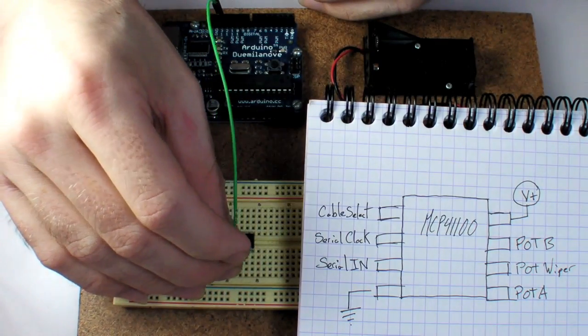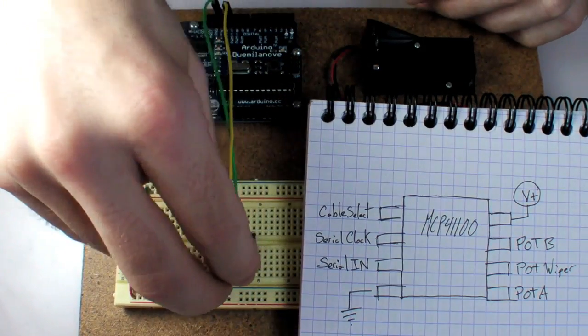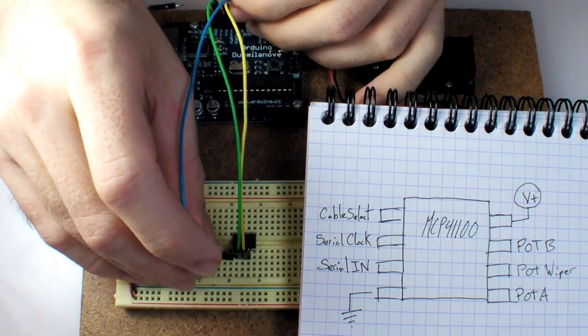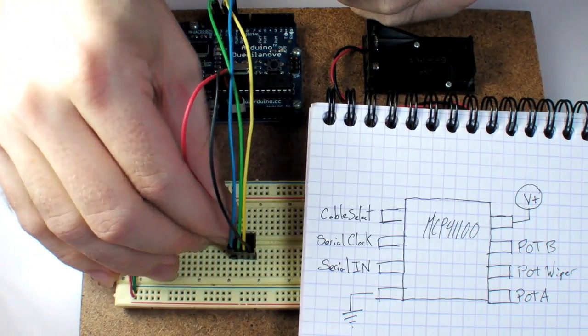Five connections need to be made between the Arduino and the DigiPot: three for serial communication and two for power.